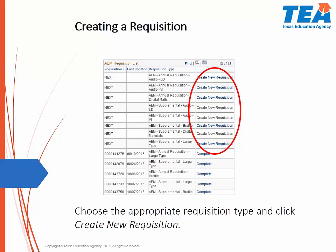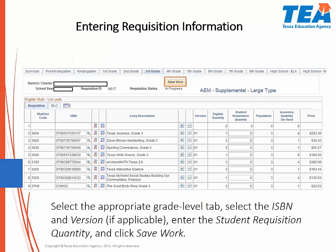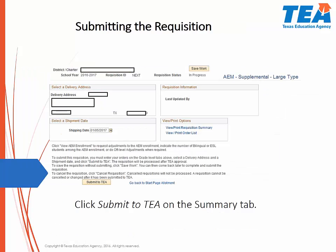If you are using digital materials in the classroom, you may order a subscription for students with a print disability using the AEM requisition. This will allow you to receive that subscription for eligible students free of charge without having to use IMA funds as you do for regular classroom materials. Select the appropriate grade level tab, select the ISBN and version if applicable, enter the student requisition quantity, and click Save Work. Please note that the quantity entered cannot be greater than the eligible quantity. The final step is extremely important: remember to return to the Summary tab and click Submit to TEA. If this is not done, your requisition will show it is in progress and has not been submitted. We cannot approve the requisition without this final step.